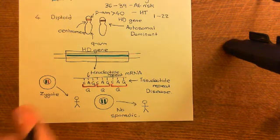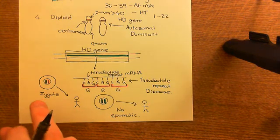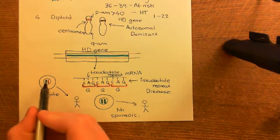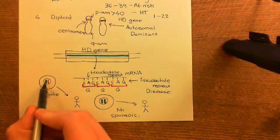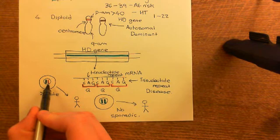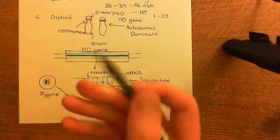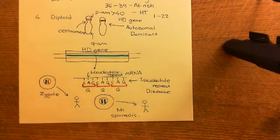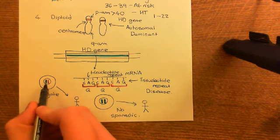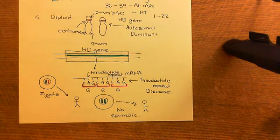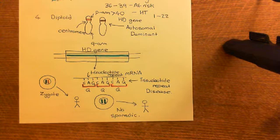You might think that surely that does mean that to get Huntington's disease one of your parents had to have Huntington's disease, because one chromosome has come from your mother and one has come from your father. So you know that one of your parents must have had the faulty Huntington's disease gene as well and therefore must have had Huntington's disease. But that's not necessarily the case.